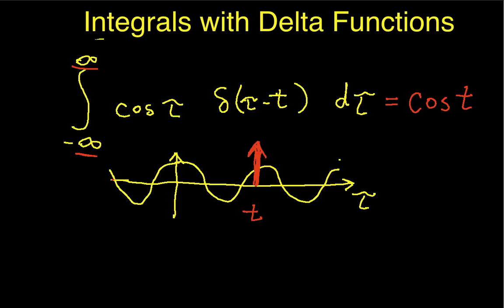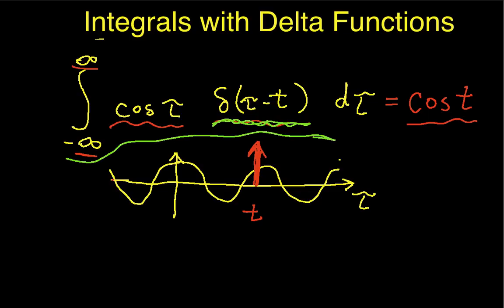When I first saw this, I thought that's the most pointless thing I've ever seen. You take a function, put it in this complicated integral times the delta function, work the integral, and you get the function back. But it turns out this is important when looking at linear time invariant systems, because if I know what the response of the system is to a delta function, then I can use this integral relationship to figure out what the response of the system will be to any function used as an input. That's why we care about this particular property of delta functions.